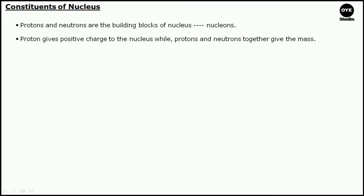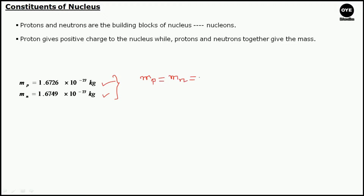Let us calculate the mass of the nucleus. The mass of a proton is 1.6726 × 10⁻²⁷ kg, and the mass of a neutron is 1.6749 × 10⁻²⁷ kg. Since the mass of the proton and neutron are roughly equal, we can write mass of proton Mp equals mass of neutron Mn, both equal to a common mass m. Therefore, the mass of the nucleus M equals m multiplied by the total number of nucleons, which is the mass number A.